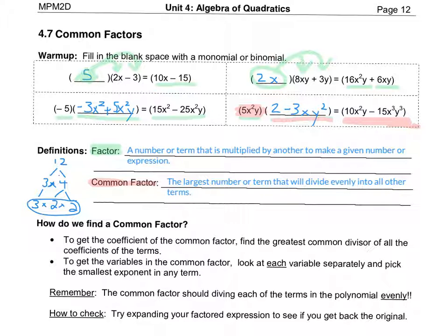The common factor is the largest number or term that will divide evenly into all other terms — that is the greatest common factor. So we're going to learn how to actually find a common factor. If we don't have a blank to fill in, the question is: how do we do that?